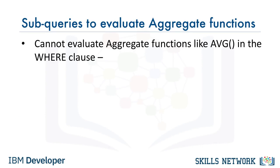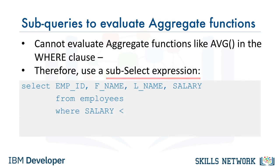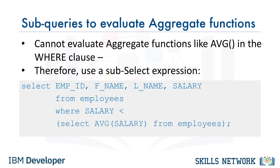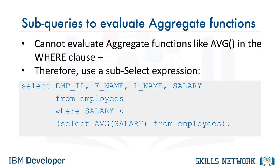So, to evaluate a function like average in the WHERE clause, we can make use of a subselect expression like the one shown here: SELECT employee_id, first_name, last_name, salary FROM employees WHERE salary is less than (SELECT AVG(salary) FROM employees). Notice that the average function is evaluated in the first part of the subquery, allowing us to circumvent the limitation of evaluating it directly in the WHERE clause.